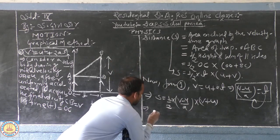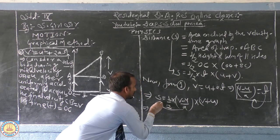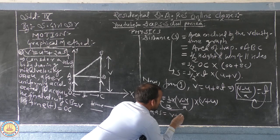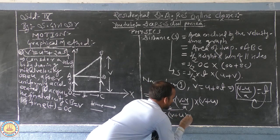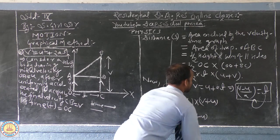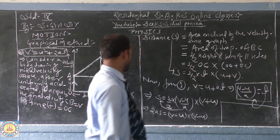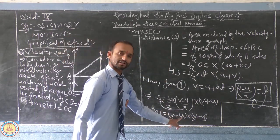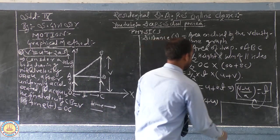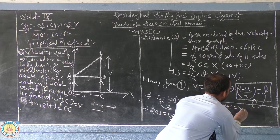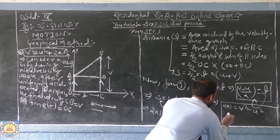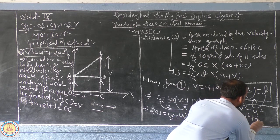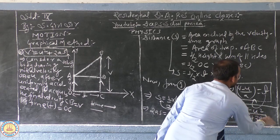So s = ½ × (v + u)(v − u) / a. By cross multiplication, 2as = (v + u)(v − u). Using the identity (a + b)(a − b) = a² − b², we get 2as = v² − u². Rearranging, we obtain the required third equation: v² = u² + 2as.